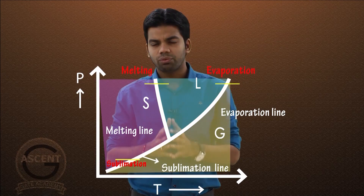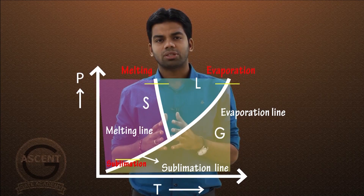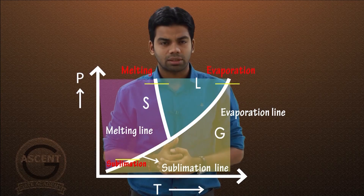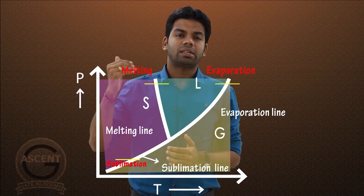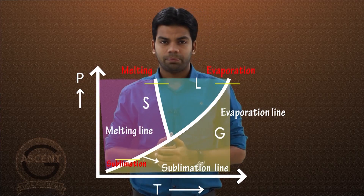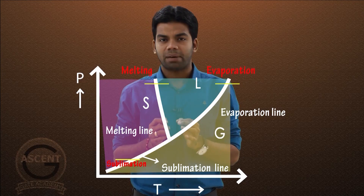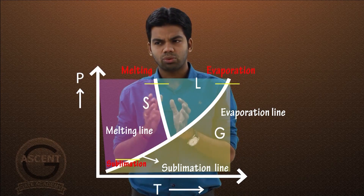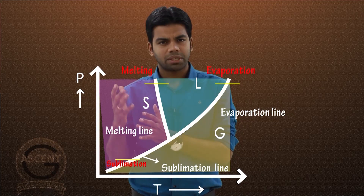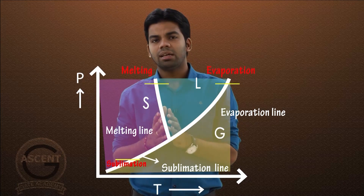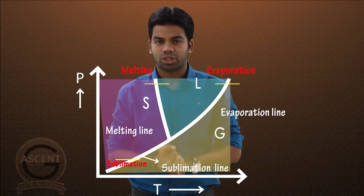For example, at atmospheric pressure the melting temperature of ice is 0°C. If I increase the pressure to 10 bar, the melting temperature of ice becomes minus 0.1°C. The rate of decrease is not large, but the temperature does decrease with respect to pressure.